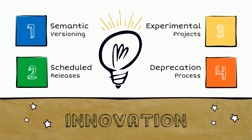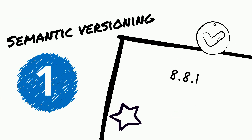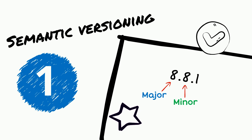There are four processes of innovation in Drupal. First, semantic versioning. SemVer allows developers to separate breaking changes introduced in major version updates from new feature releases in minor versions and bug and security fixes in patch releases.